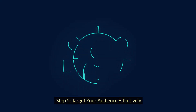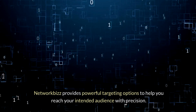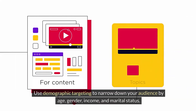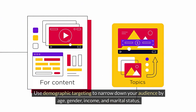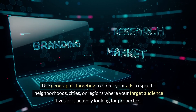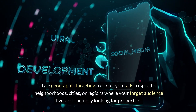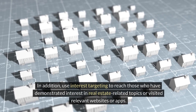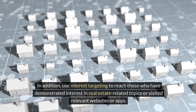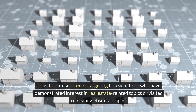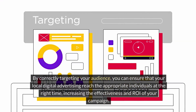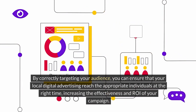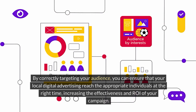Step 5: Target your audience effectively. Network Biz provides powerful targeting options to help you reach your intended audience with precision. Use demographic targeting to narrow down your audience by age, gender, income, and marital status. Use geographic targeting to direct your ads to specific neighborhoods, cities, or regions where your target audience lives or is actively looking for properties. In addition, use interest targeting to reach those who have demonstrated interest in real estate related topics or visited relevant websites or apps. By correctly targeting your audience, you can ensure that your local digital advertising reaches the appropriate individuals at the right time, increasing the effectiveness and ROI of your campaign.